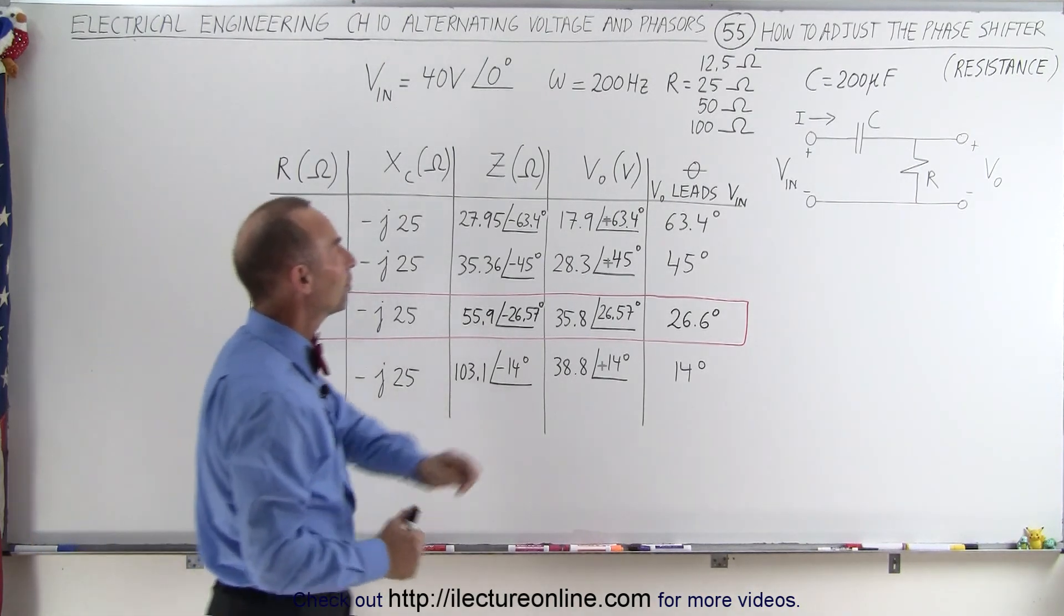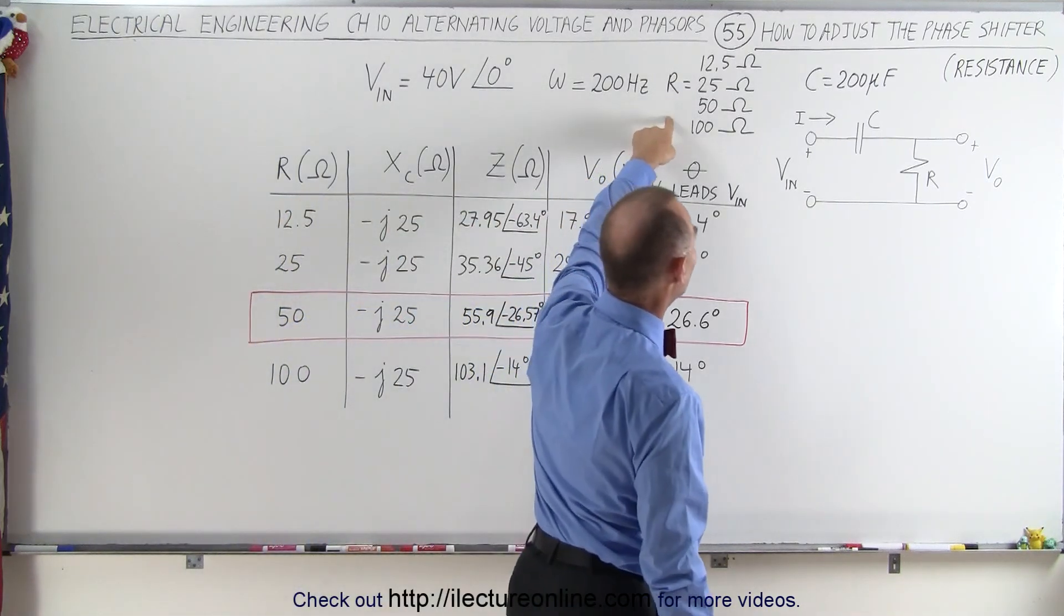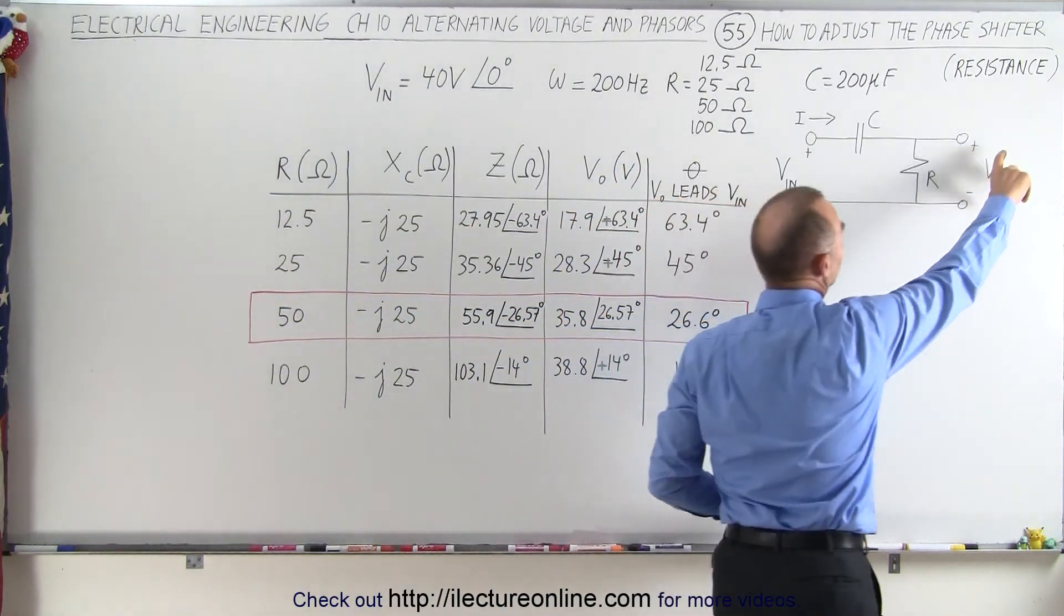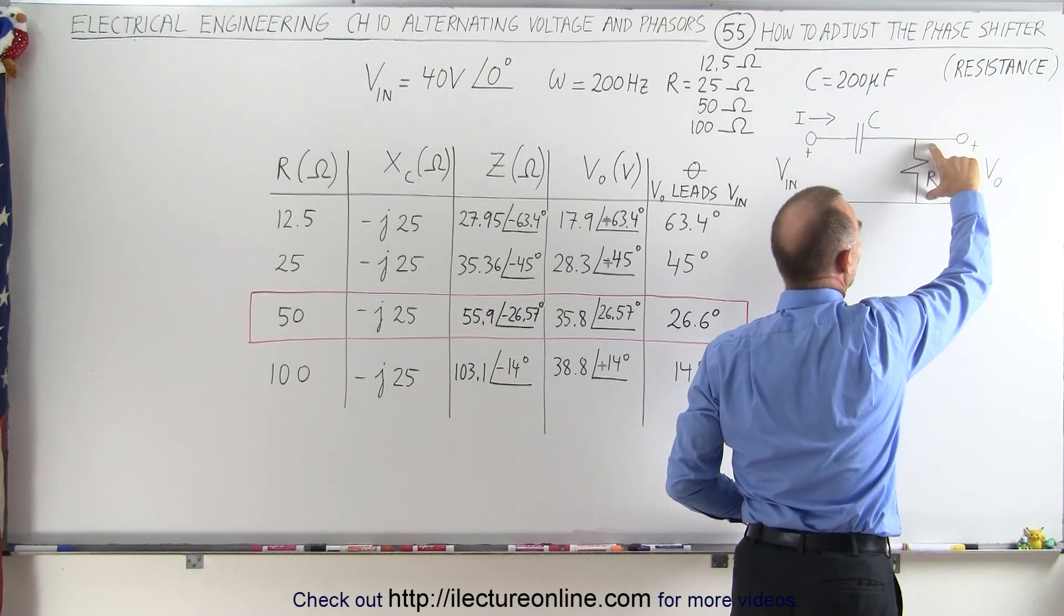So what we're going to do is put in various values of the resistor. And of course, notice that the output voltage is the same as the voltage across the resistor.